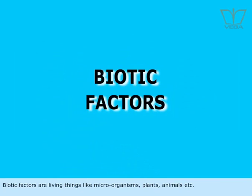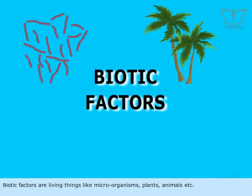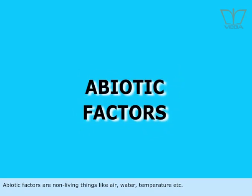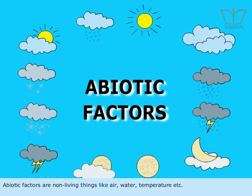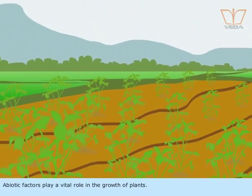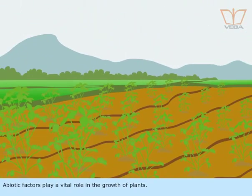Biotic factors are living things like microorganisms, plants, animals, etc. Abiotic factors are non-living things like air, water, temperature, etc. Abiotic factors play a vital role in the growth of plants.